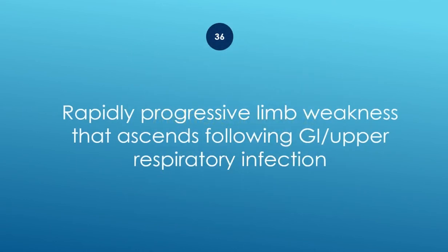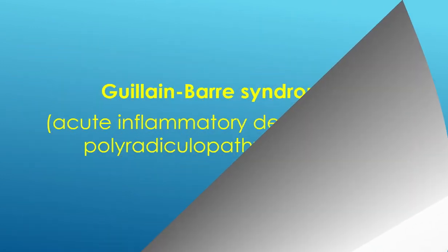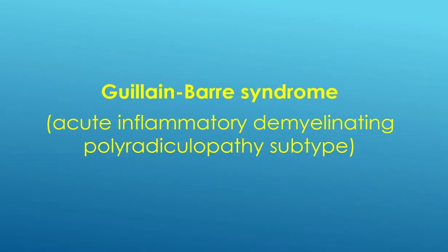Rapidly progressive limb weakness that ascends following GI or upper respiratory infection — Guillain-Barré syndrome. Acute inflammatory demyelinating polyradiculopathy subtype.